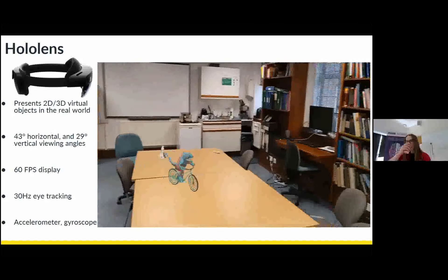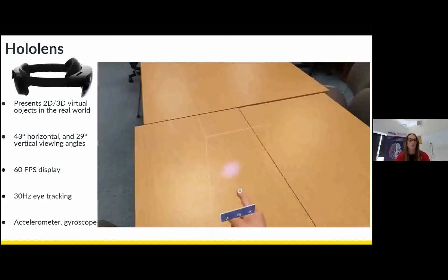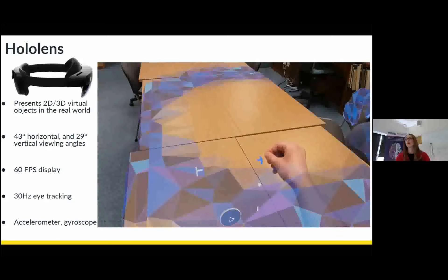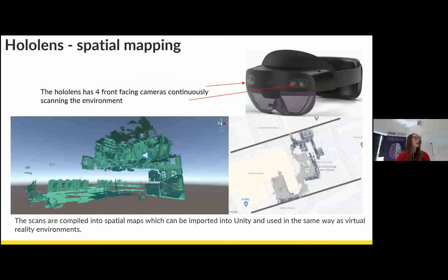And the other thing that the HoloLens can do is take scans of the real world, a visual demonstration of which you'll see here with these blue triangles. That's the HoloLens scanning the real world. So as you walk around the real world, it's continuously scanning it. And it puts these scans together into a three dimensional map of the real world, an example of which you can see here.